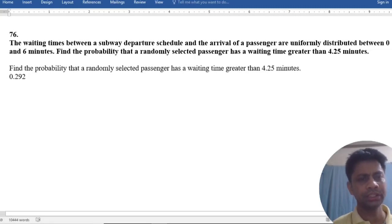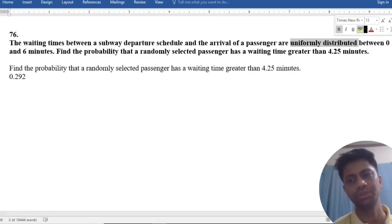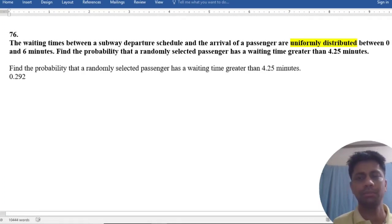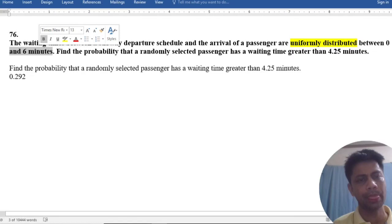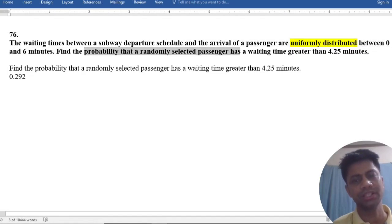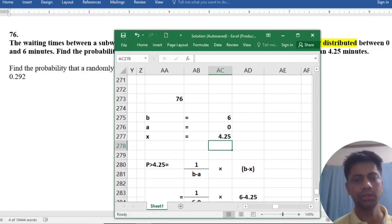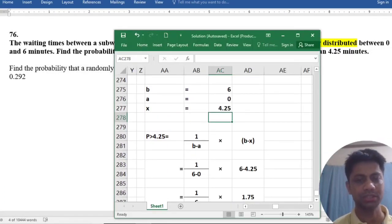The waiting time between a subway departure schedule and the arrival of a passenger is uniformly distributed. You have to keep in mind uniformly distributed between 0 to 6 minutes. Find the probability that a randomly selected passenger's waiting time is greater than 4.25 minutes. This is our question. The answer is here. We have given B is equal to 6 minutes.